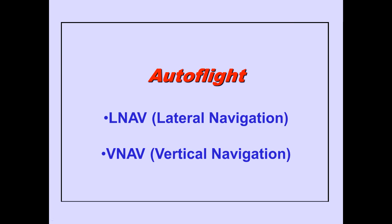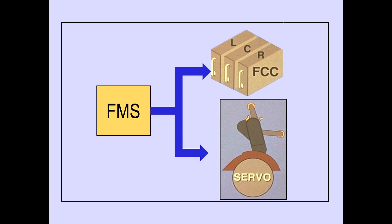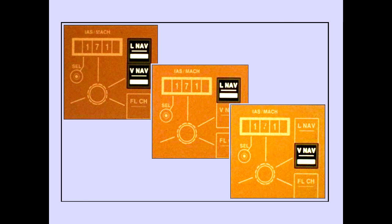In this module, we will discuss autoflight operation with LNAV and VNAV. The FMS directs the flight control computers and autothrottle servo to fly the desired profile. The FMS is covered in the FMS introduction module. LNAV and VNAV can be used together or separately with an autopilot or flight director.